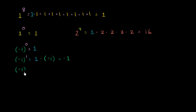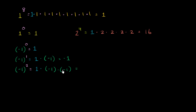Now let's take negative 1 to the second power — we say we're squaring it. We start with a 1 and multiply it by negative 1 two times. You could also just say we're taking two negative 1s and multiplying them, since that 1 doesn't change the value. Negative 1 times negative 1 is 1. And I think you see a pattern forming.